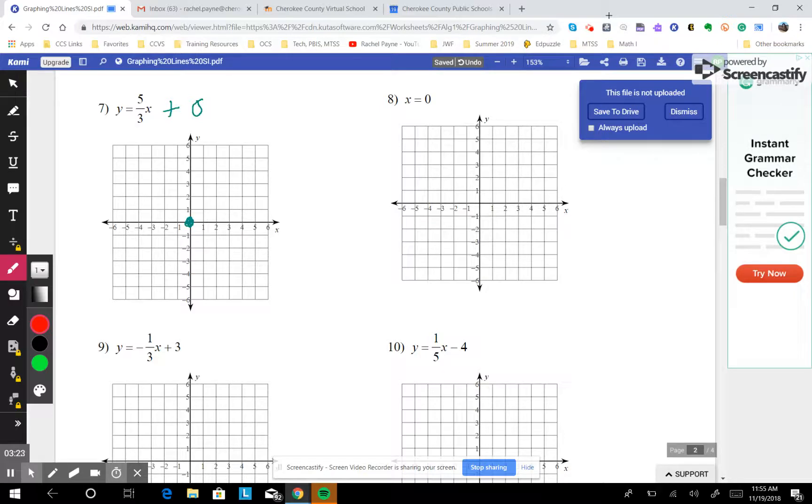Rise 5, run 3. Rise 5, run 3. Or you can put minuses on both of them. Rise negative 5, run negative 3. Still the same line.